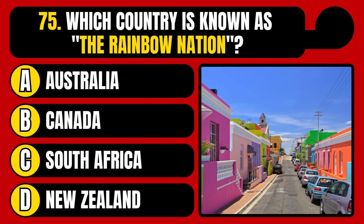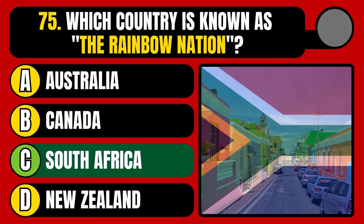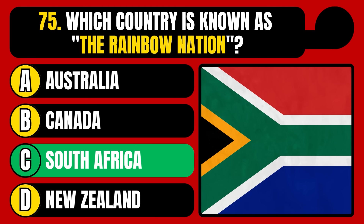Which country is known as the Rainbow Nation? Australia, Canada, South Africa, or New Zealand? The correct answer is option C, South Africa.